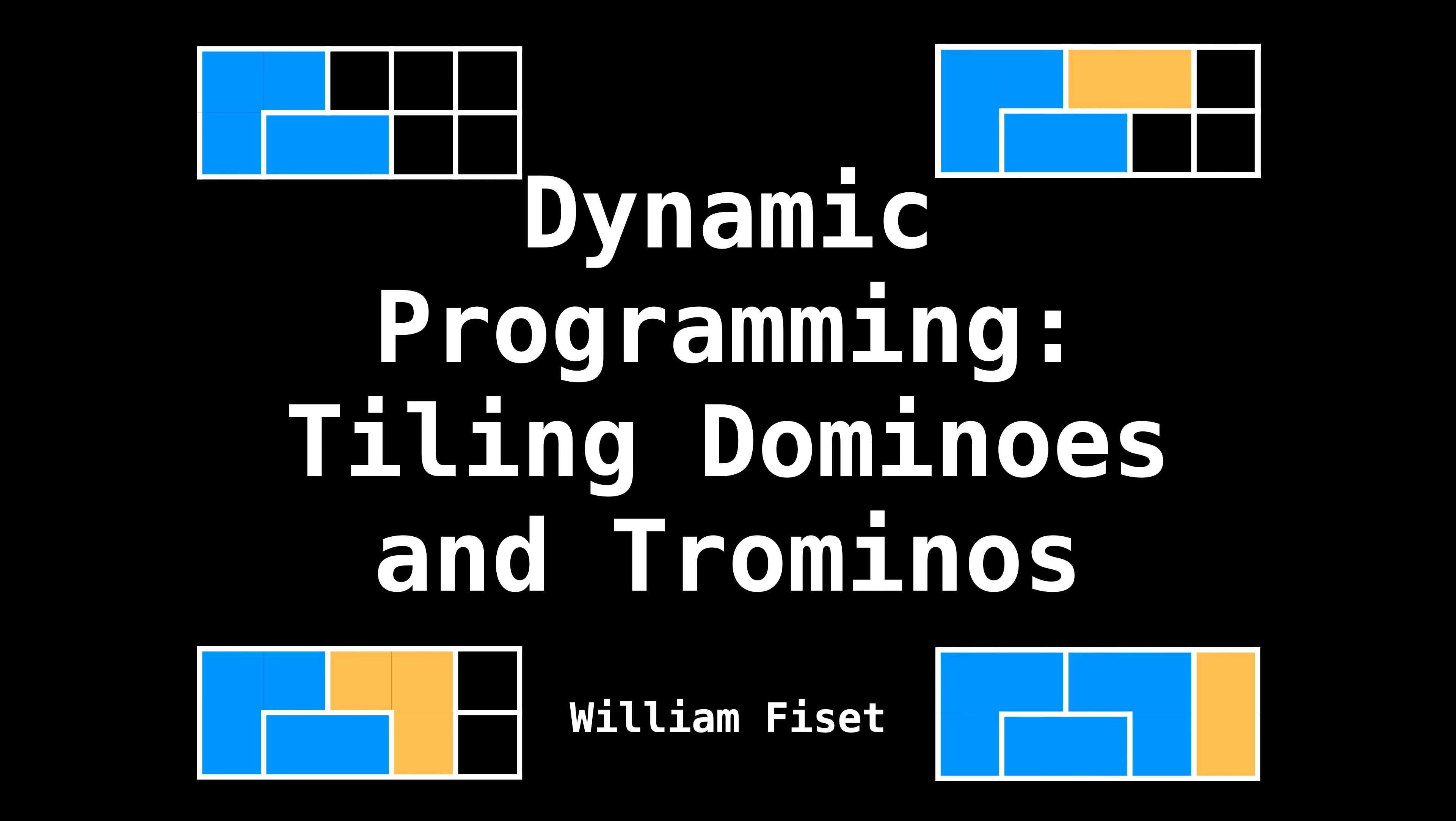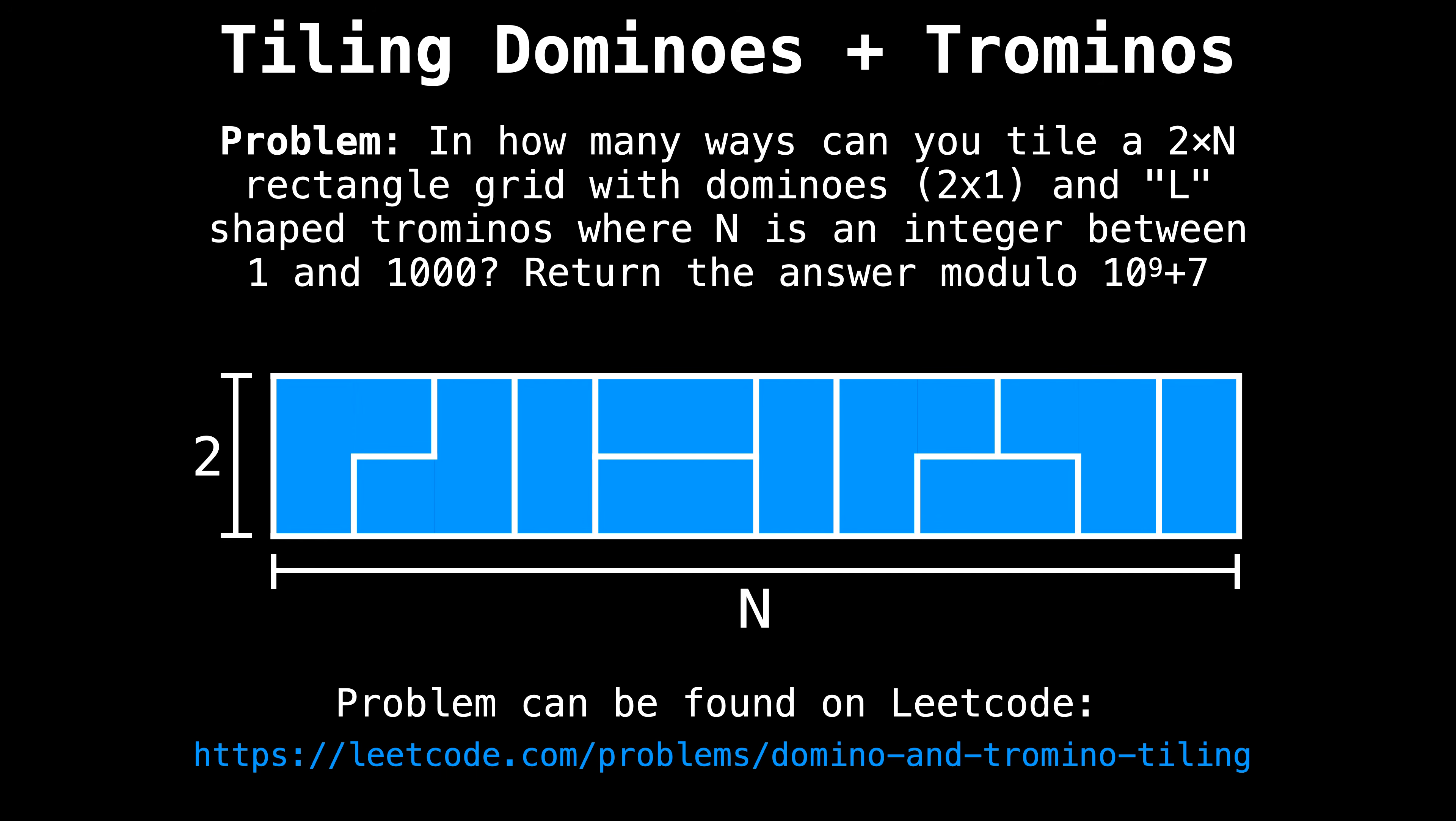Today we're tackling another tiling problem, which involves tiling dominoes and trominoes on a board. This problem is interesting because we're not only dealing with one type of block, but two types of blocks. The problem we're trying to tackle asks, in how many ways can you tile a 2×N rectangle grid with 2×1 dominoes and L-shaped trominoes, where N is an integer between 1 and 1000? Return the answer modulo 10^9+7.